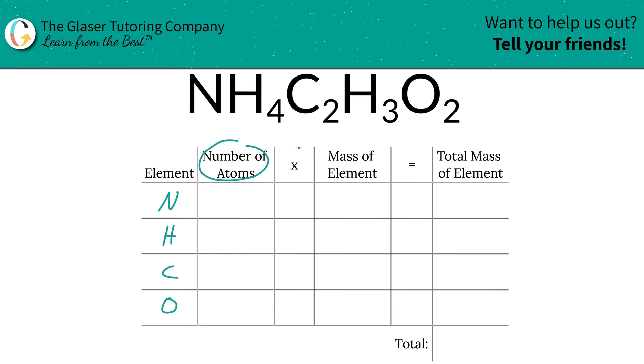Next is to write down the number of atoms of each. In this compound there's only one nitrogen. That's where the subscripts come into play. Hydrogen, on the other hand, you've got in two spots. To find the total you simply add up the number of hydrogen in each. So we've got seven hydrogens. Carbon is a two, so we've got two carbons, and then we've got two oxygens.